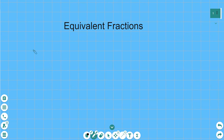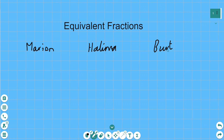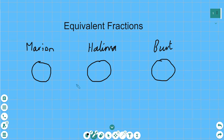So I'm going to have three friends: Marion, Halima, and Bert. They each buy a pizza, because they're hungry. Now Marion chops her pizza straight in half. So if we do a fraction representing Marion's pizza, it's going to have two on the bottom in the denominator position. She eats half her pizza — that's one of her pieces — so one goes on the top. She's eaten one half.